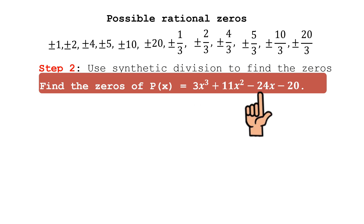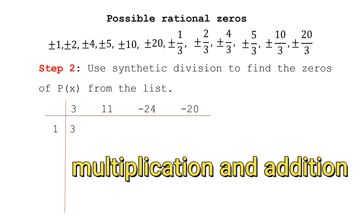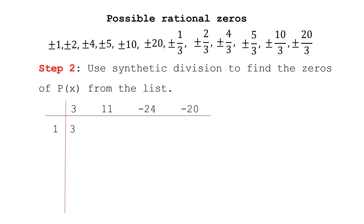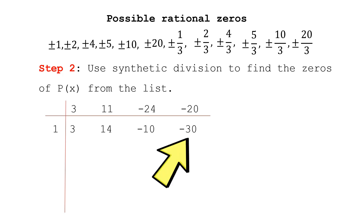If the remainder is zero, then the tested value is a zero of the function. Let's try x = 1: bring down 3, then 3×1=3, 3+11=14, 14×1=14, 14+(-24)=-10, -10×1=-10, -10+(-20)=-30. The remainder is -30, not zero, so 1 is not a zero. Let's try x = 2: bring down 3, 3×2=6, 6+11=17, 17×2=34, 34+(-24)=10, 10×2=20, 20+(-20)=0. The remainder is zero, so 2 is a zero.